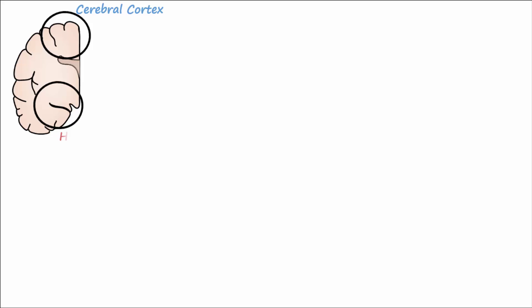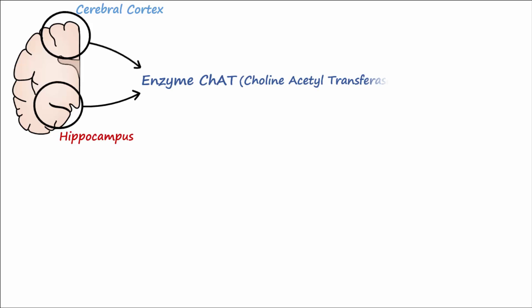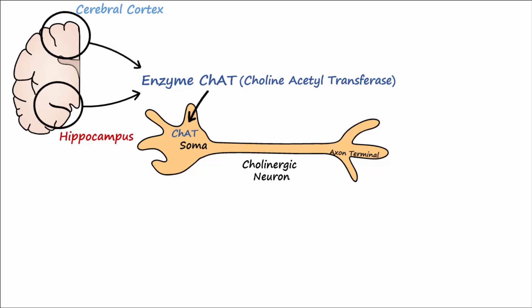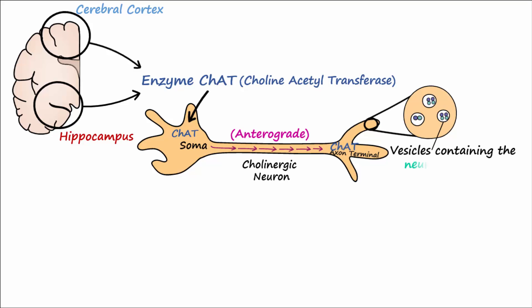Additionally, in the cerebral cortex and hippocampus, the enzyme ChAT, or choline acetyltransferase, is produced in cholinergic neuron soma and travels anterograde to the axon terminal, where it produces acetylcholine, a neurotransmitter essential in learning and formation of memories.